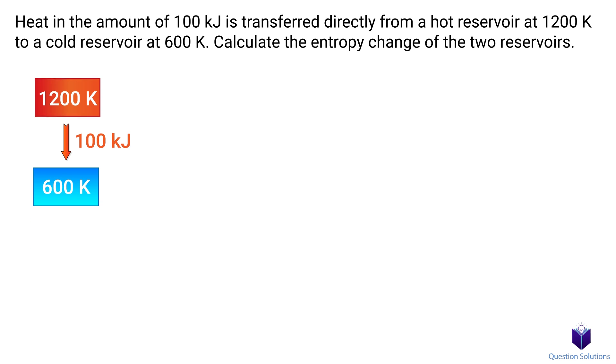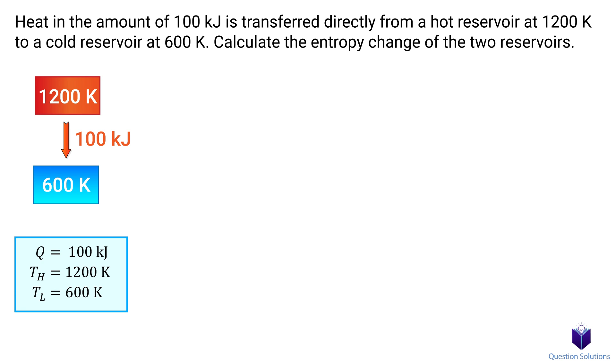Let's take a look at this problem, where we have heat transferred from a hot reservoir to a cold reservoir. We need to figure out the entropy change of both reservoirs. Let's start by writing down what we know. 100 kJ of heat is transferred to the cold reservoir. The hot reservoir has a temperature of 1,200 Kelvin, and the cold reservoir has a temperature of 600 Kelvin.